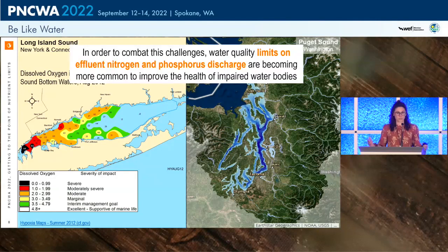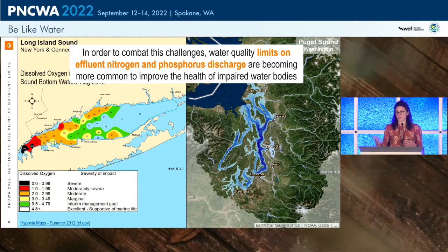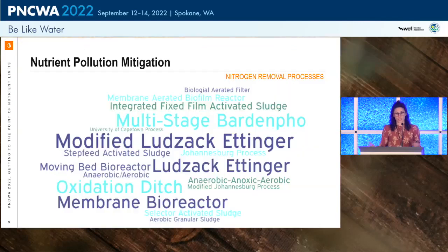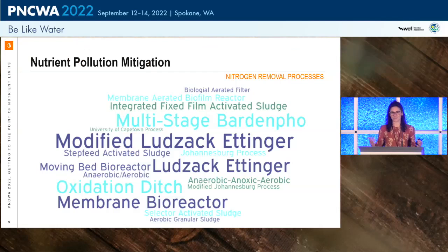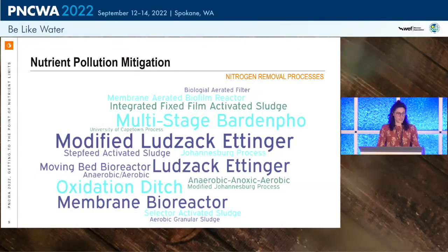To address these challenges, water quality limits on effluent nitrogen and phosphorus are becoming more common, and in this area it's particularly tailored around nitrogen limitations. As engineers, we focus on point sources. Looking at nitrogen removal processes, there are about 20 to 30 different processes that can be applied to address nitrogen in wastewater — this word cloud gives a sense of the breadth of options available.